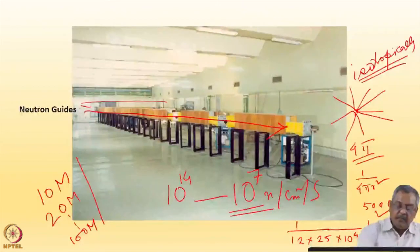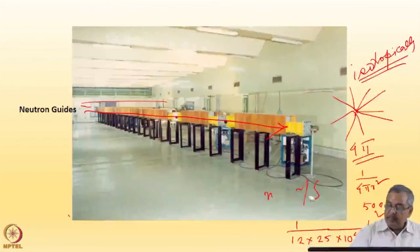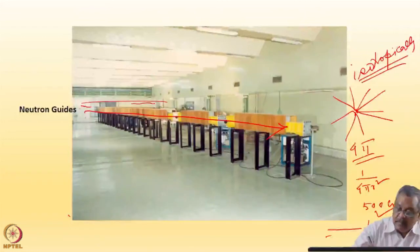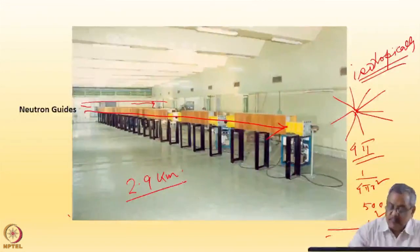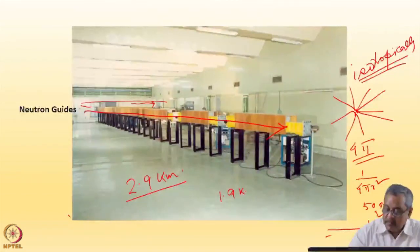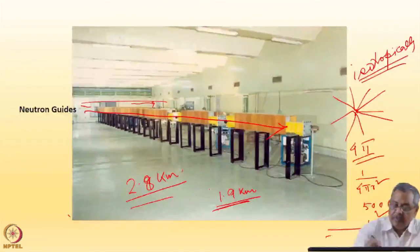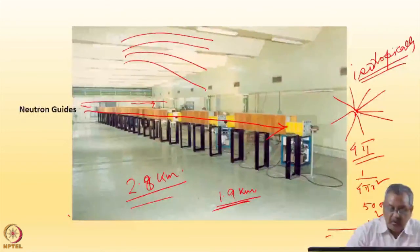So we can eliminate gamma ray and fast neutron backgrounds by bending the neutron guides. The guide hall has two guides: one has a radius of curvature of 2.9 km and the other has a radius of curvature of 1.9 km — so 2800 meters and 1900 meters respectively — in order to avoid fast neutrons and gamma rays.